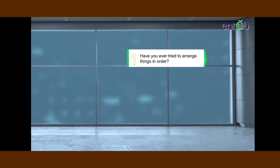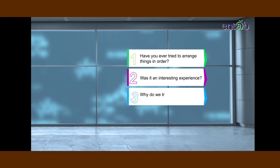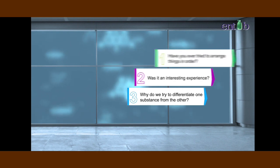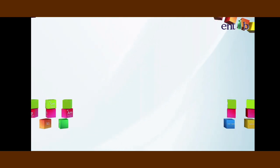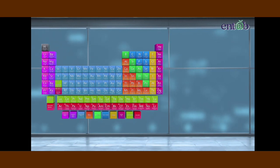Have you ever tried to arrange things in order? Do you think it is an interesting experience to do so? Why do we try and differentiate one substance from another? Think about the scientists who wished to arrange all the elements in one table in a way that similar elements were sequentially close to one another.